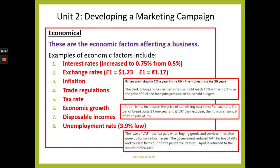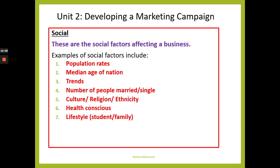The unemployment rate is currently at 3.9%, which is actually quite low. That means a lot of people are in work, employed, and have jobs. That's the economical factor in PESTO — if you see anything related to economics, highlight it in Part A and be prepared to use it in Part B during your exam.